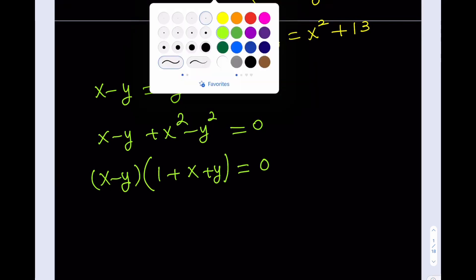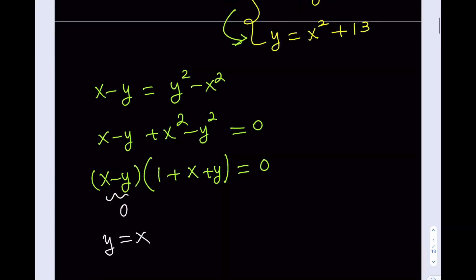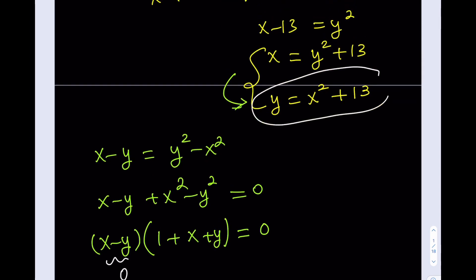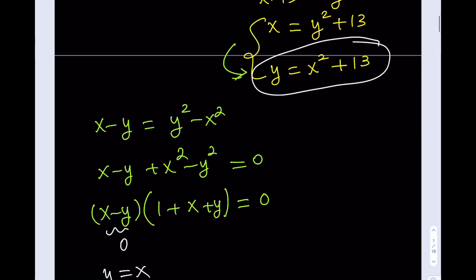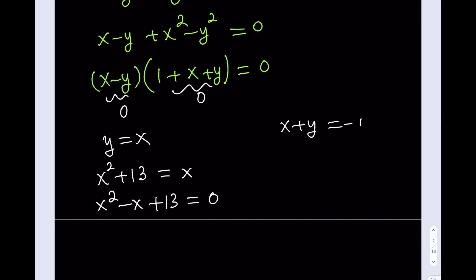From here I get really nice results. The first factor gives me x equals y, and since y equals x squared plus 13, substituting gives x squared plus 13 equals x, which becomes the quadratic x squared minus x plus 13 equals zero. The second factor gives x plus y equals negative 1. Since y equals x squared plus 13, this gives x plus x squared plus 13 equals negative 1, which becomes the quadratic x squared plus x plus 14 equals zero.